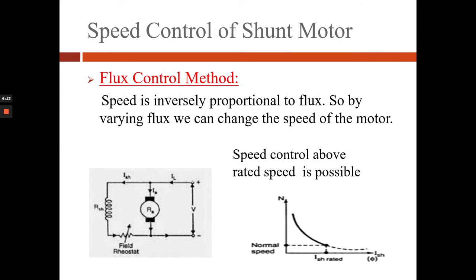First we will see the flux control method. In order to change the speed we have to change the flux. This can be achieved by changing the field current, and the field current can be changed by changing the value of the rheostat connected in series with the field winding.